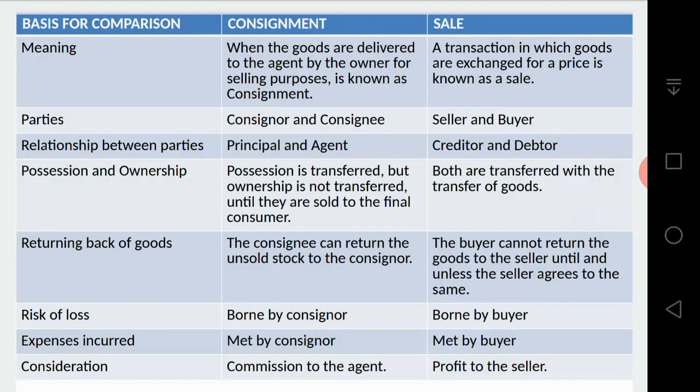Next comes returning of goods. In consignment, the consignee can return the unsold stock to the consigner — if some stock remains unsold, the consignee can send it back. But in a sale, once the sale is done, the buyer cannot return goods to the seller unless the seller agrees. The seller may accept it — such as in cases of sales returns or purchases returns.